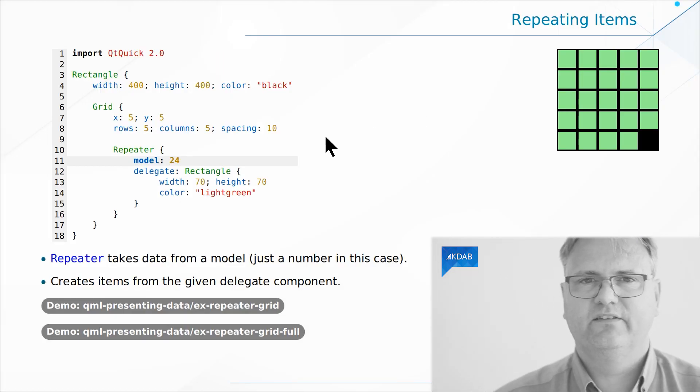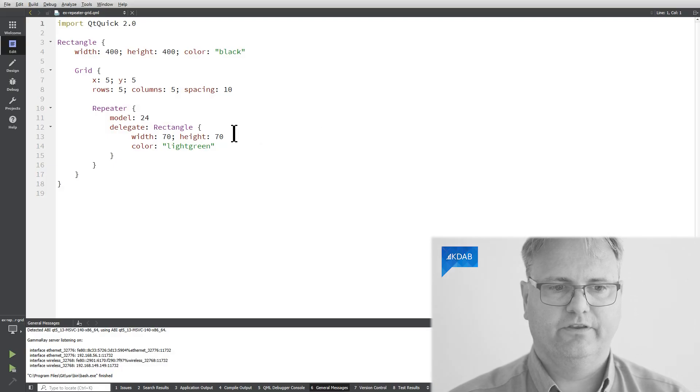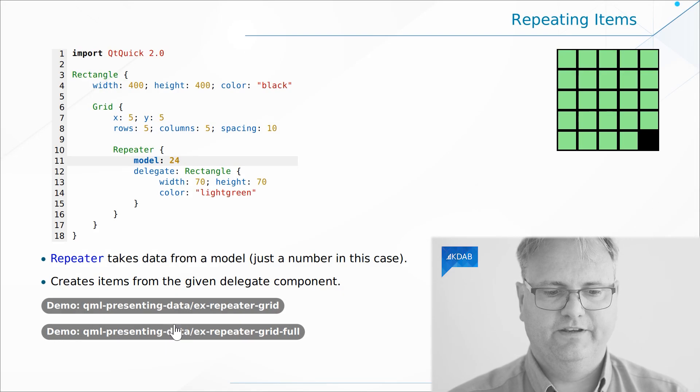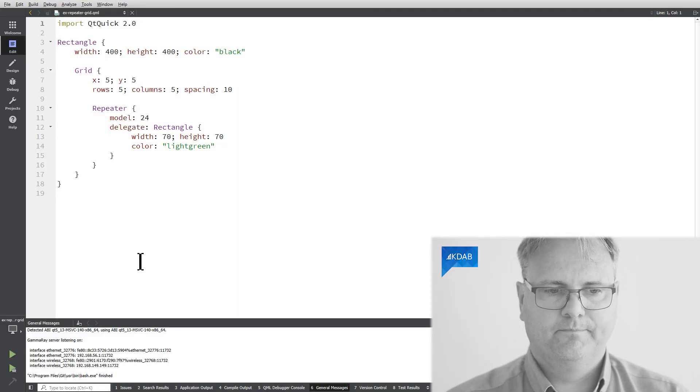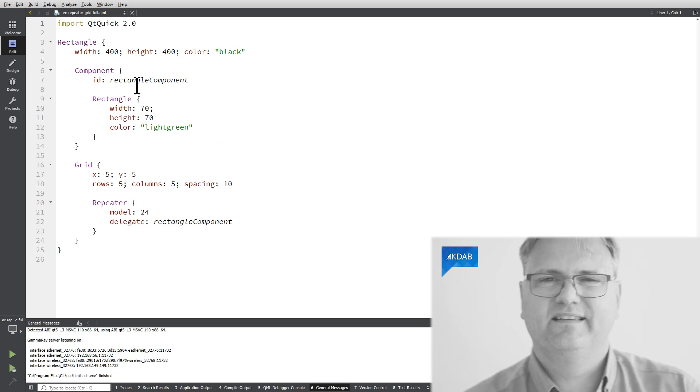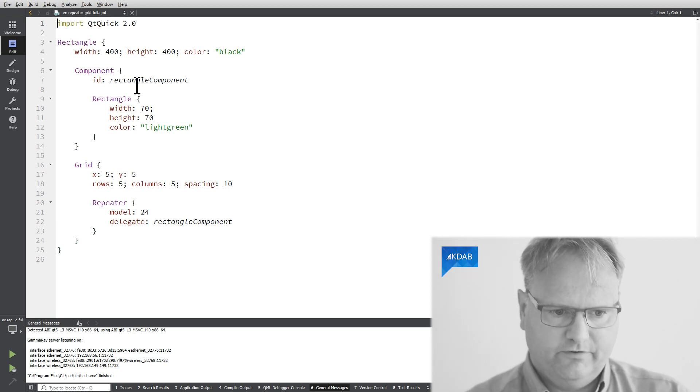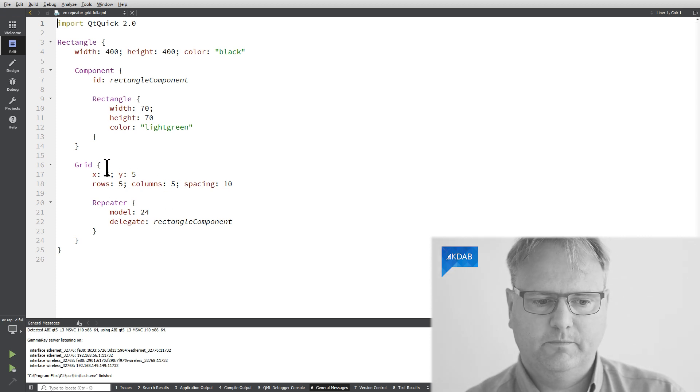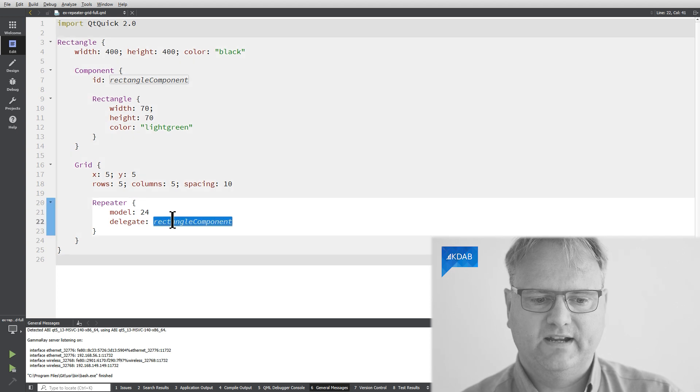Let me show you a different version of exactly the same code. And if we go back here and look at the code, repeater, model, delegate colon rectangle, the different version looks almost the same. Except that this time, I took the delegate and pulled it out of the repeater. So again, my grid, same thing as before, my repeater model 24, delegate rectangle component. My rectangle component is specified up here. It's a component. And remember from a previous video, the component is not the element. I like to think of the component as a blueprint. So you've got this blueprint that you can put into your photocopying machine and then you can get a bunch of elements out of it.